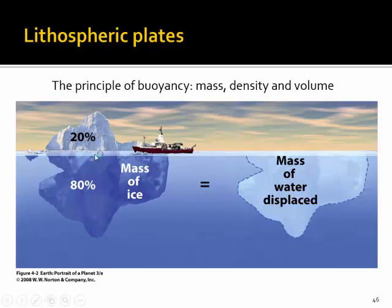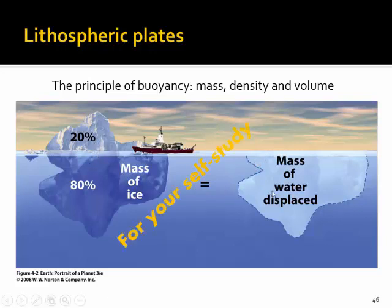You might know from your physics lectures the example of icebergs, which are 80% submerged in seawater with only 20% visible above sea level — a matter of displacement of water by the lower-density ice. You can revise that in the textbook; this comes from Chapter 4 in Marshak's Portrait of a Planet. So much for today — thank you very much.